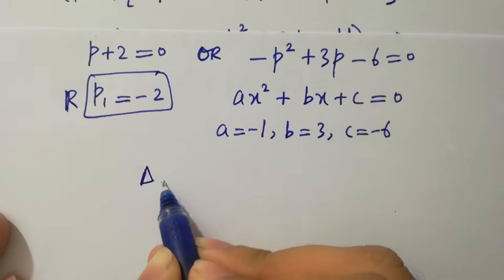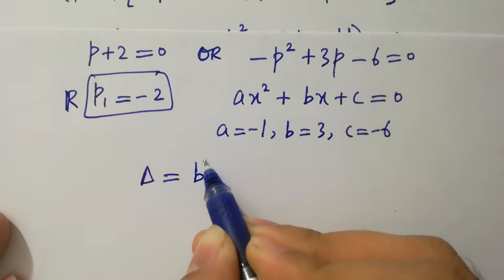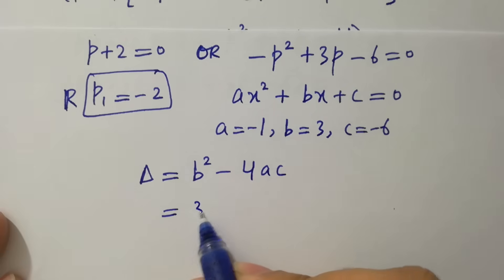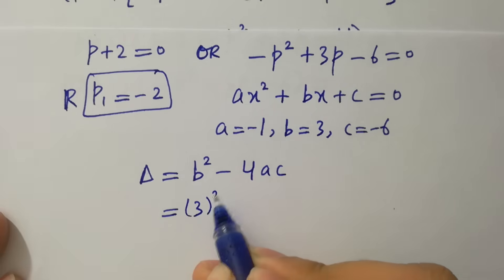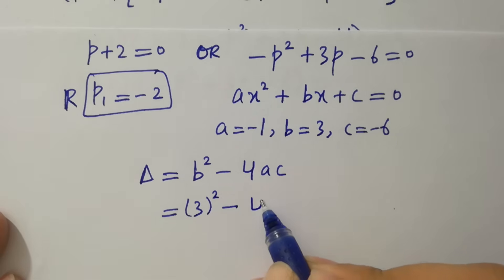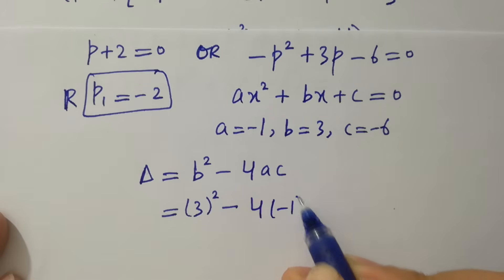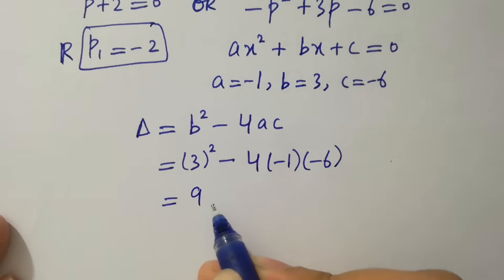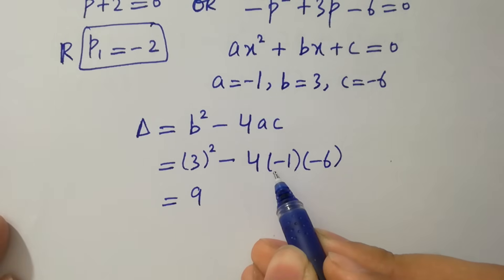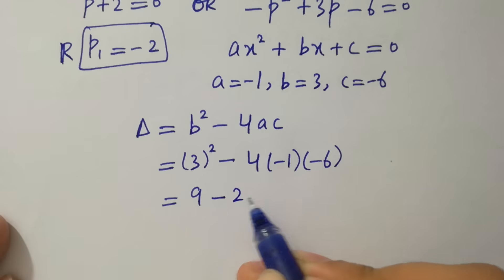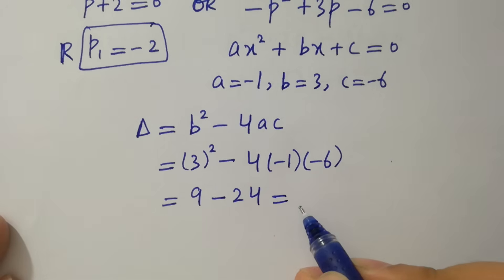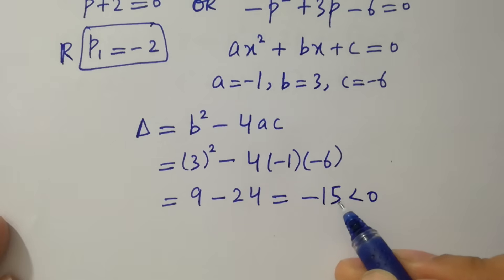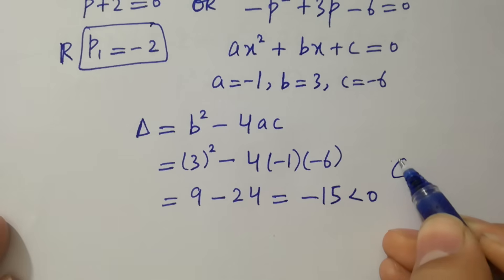The discriminant equals b squared minus 4ac. With b equals 3, a equals minus 1, and c equals minus 6: discriminant equals 9 minus 4 times (minus 1) times (minus 6) equals 9 minus 24 equals minus 15, which is less than zero. This means it will give complex solutions.